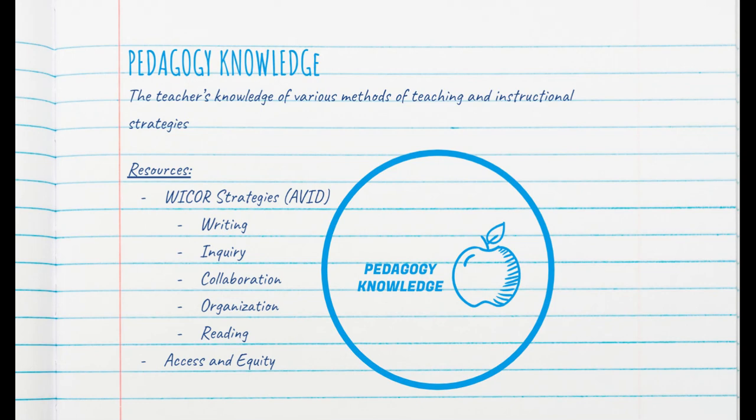Having these various ideas behind the methods of teaching and instruction, writing could be providing students extensive structures or starters. Inquiry could be teaching students how to ask questions or asking essential questions within each subject matter. Collaboration could be such things as think-pair-shares or peer-teaching. Organization could be teaching them about Cornell notes, organizing their binder, or interactive notebooks. And reading strategies could be marking the text. On top of that, access and equity are important to consider for the various teaching and instructional strategies that you do.